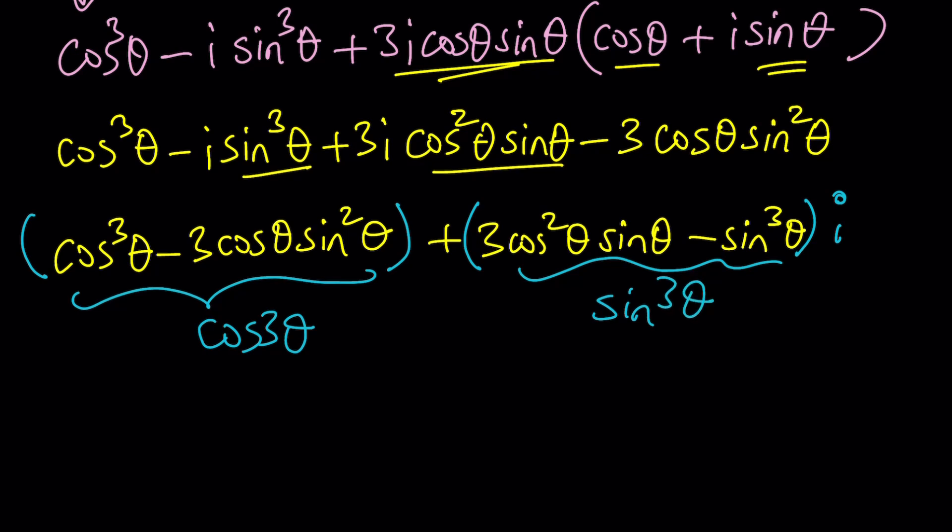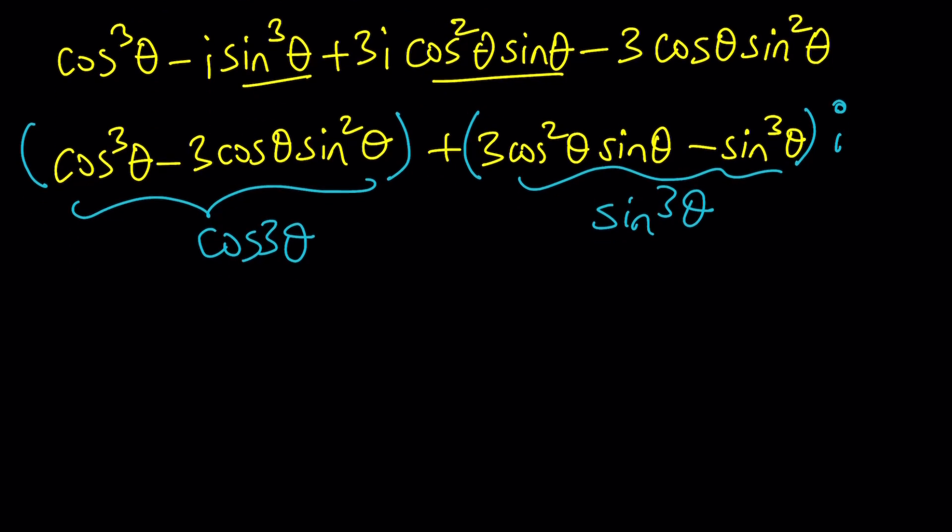And obviously you can use this method to find cosine 4 theta, 5 theta, 7 theta, whatever you want. Just use the binomial theorem to find any of those expressions that you want.